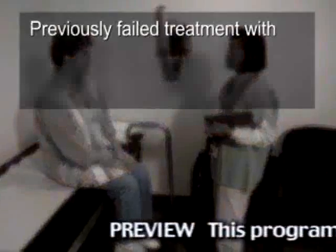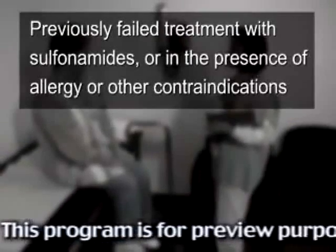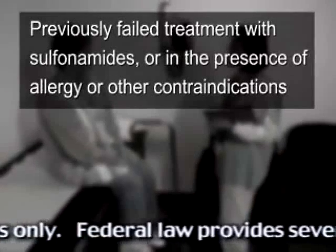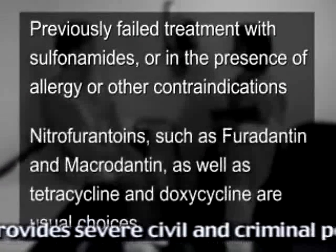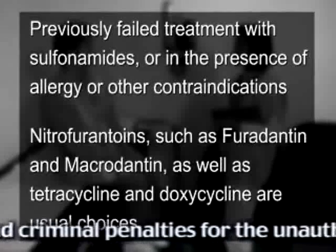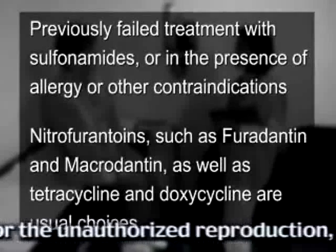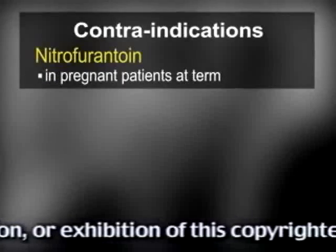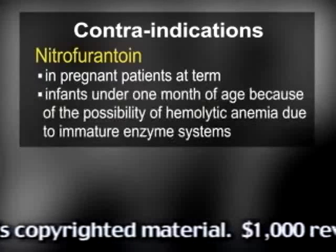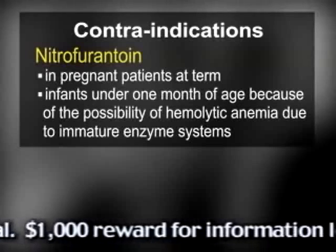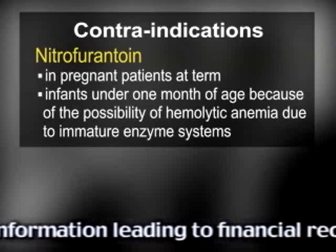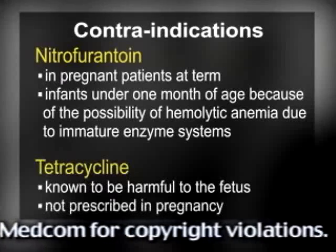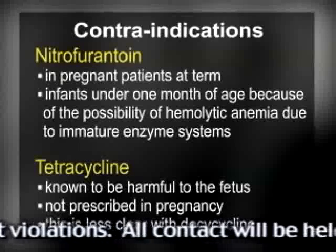However, if the patient had previously failed treatments with sulfonamides, or in the presence of allergy or other contraindications, another class of medications would have been chosen. The nitrofurantoins, such as furadantin and macrodantin, as well as tetracycline and doxycycline, are usual choices. Nitrofurantoin is contraindicated in pregnant patients at term, as well as in infants under one month of age, because of the possibility of hemolytic anemia due to immature enzyme systems. Tetracycline is known to be harmful to the fetus, so it is not prescribed in pregnancy, although this is less clear with doxycycline.